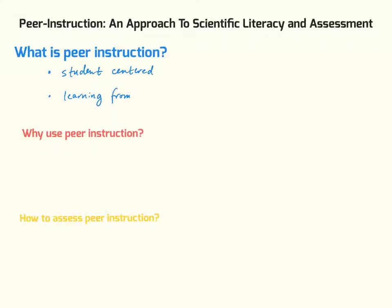So with that being said, how do students actually learn from their peers? Well, the basic structure of peer instruction that I use is a result of my flipped classroom approach. So outside of class, I'll have students watch introductory video lectures on basic concepts. And then when we come into class, I use these things called plickers.